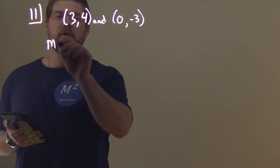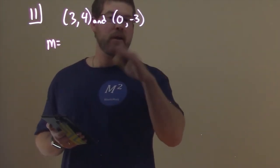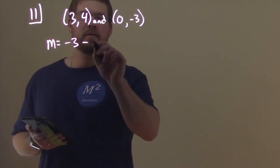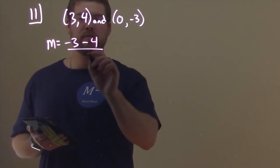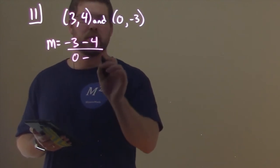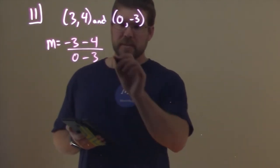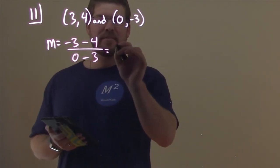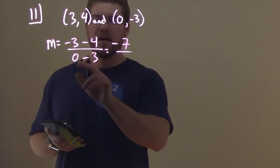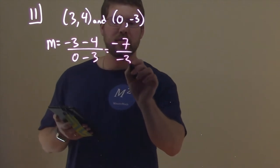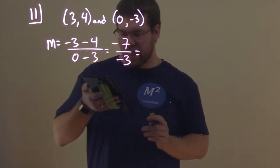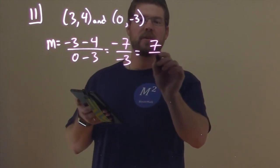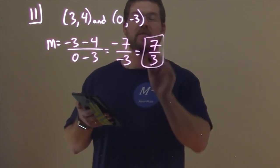M equals Y2 minus Y1. Y2, negative 3, minus Y1, 4, over X2, 0, minus X1, 3. Simplify that. Negative 3 minus 4 is a negative 7, over 0 minus 3, which is a minus 3. Simplify that out some more. Two negatives makes it a positive. So we have positive 7 thirds, and that is our slope.